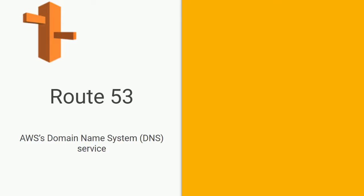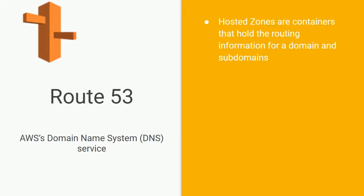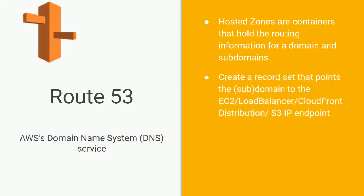Obviously, with your servers and your computes running through AWS, AWS provides a DNS service. All your domains that are hosted on AWS — the information about those, their subdomains, and all the routing information — is contained within these hosted zones.